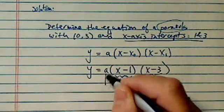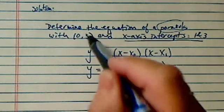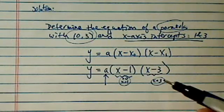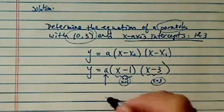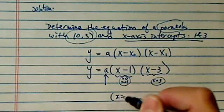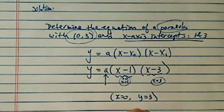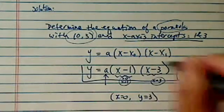Now all I have to do is find out what this a is. I have one more clue. This parabola goes through point (0, 3), which means when x equals 0, y equals 3. So let's substitute in there, in the equation above here.